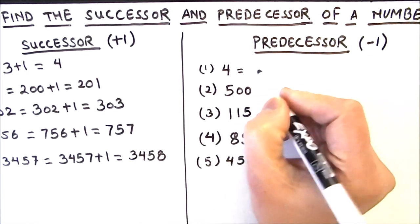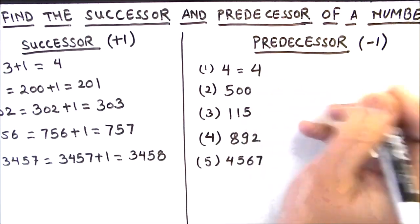Let's move on to finding the predecessor. First example is 4. Predecessor is a number which comes just before the given number, so we just need to subtract 1 from the number.